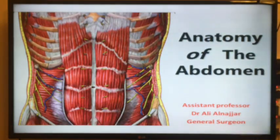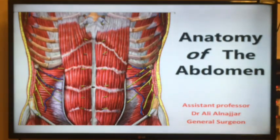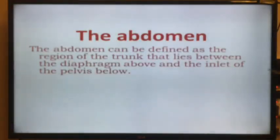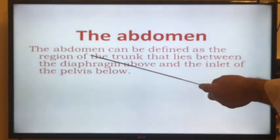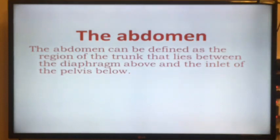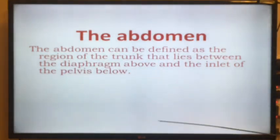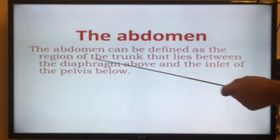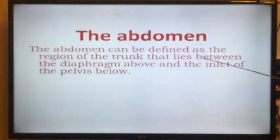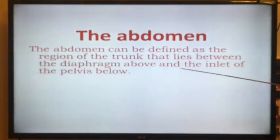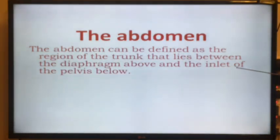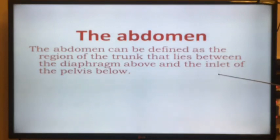Anatomy of the abdomen. To start with, I will give you a definition of the abdomen. The abdomen can be defined as the region of the trunk that lies between the diaphragm above and the inlet of the pelvis below. I will discuss the inlet of the pelvis in the next slide.